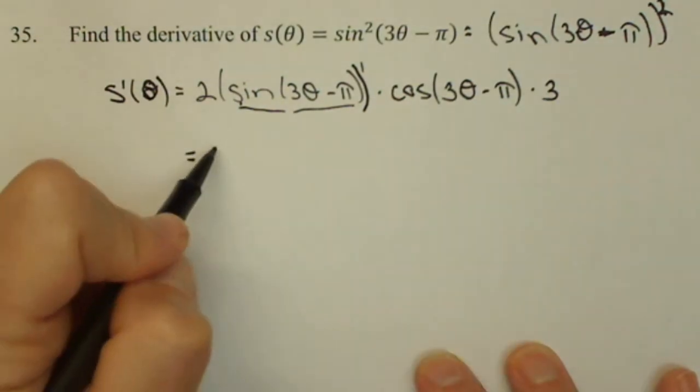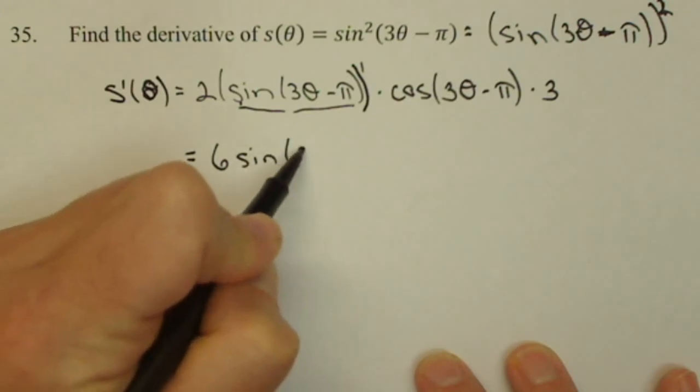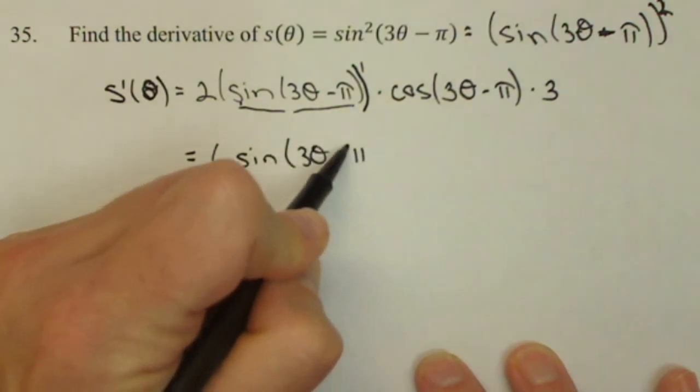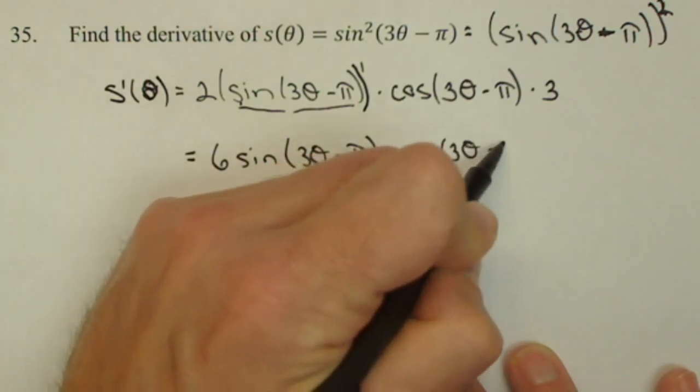We can combine those constants. So we have 6, and we're going to have sine of 3 theta minus pi times cosine of 3 theta minus pi.